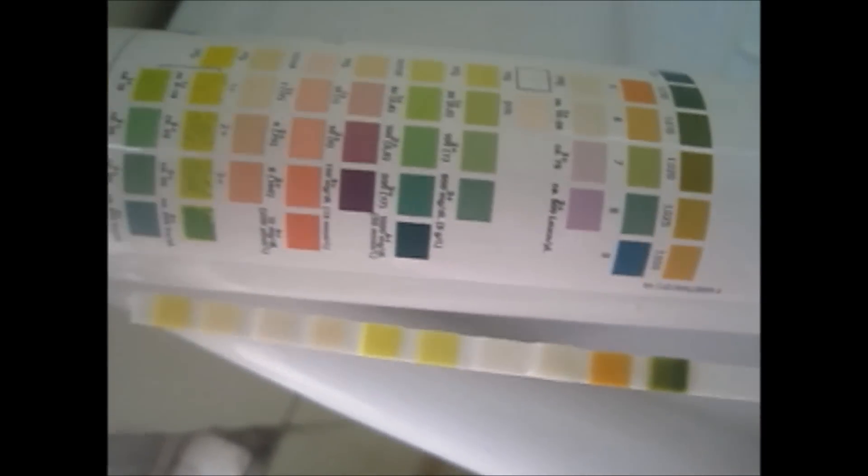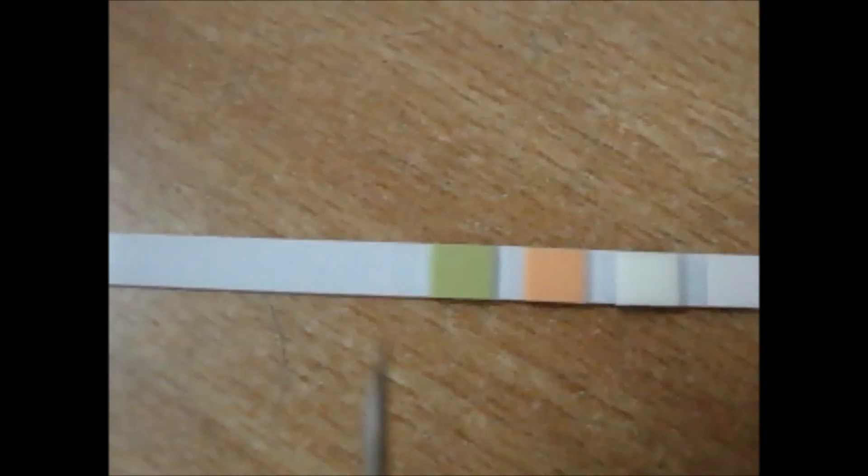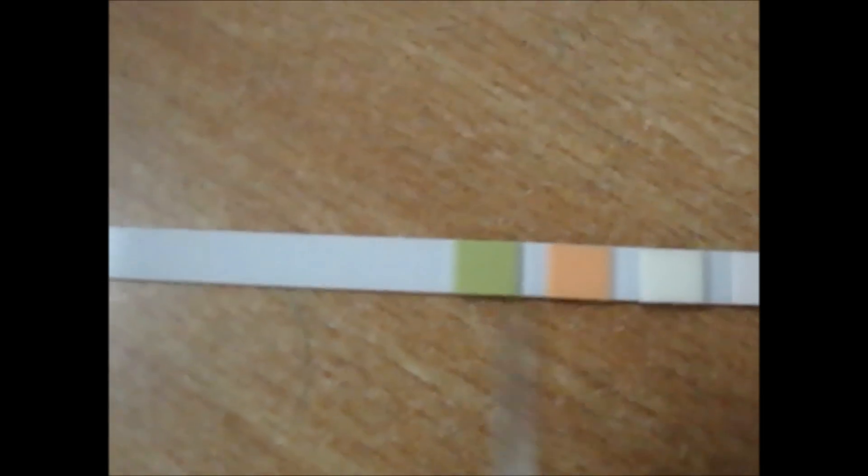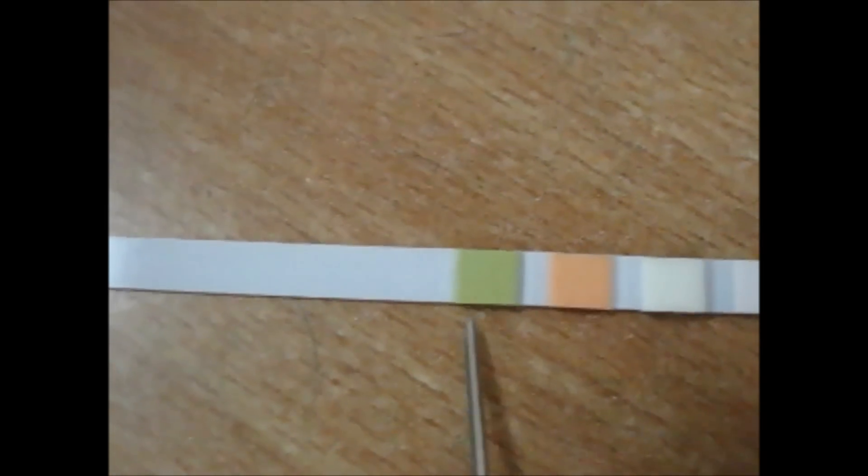You have to compare the strip with these blocks given in the vial. Different colors and each color or strip or block represents a particular test. This green block, the first one from the upper side, represents specific gravity.